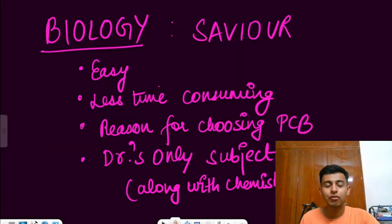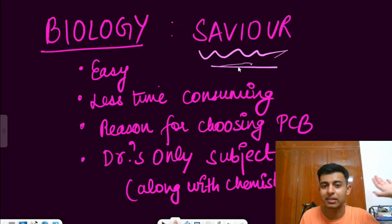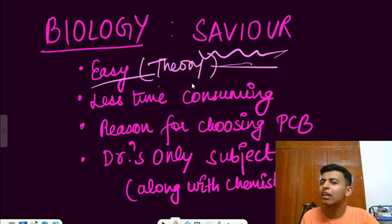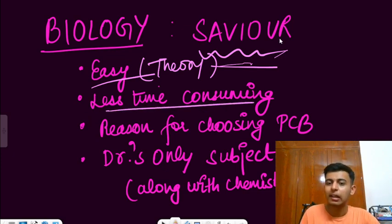So we need to try getting full marks in this subject. Let's see how we can do. First of all, biology is our savior. Reason is that bio is our favorite subject, right? Even if we are weak with physics and chemistry, bio we all can manage. So bio is first of all very easy, right? You can do it easily because it's theory-based, there are very few or no numericals, concepts are easy to tackle.